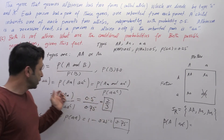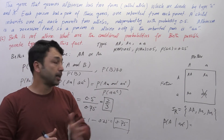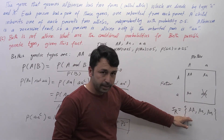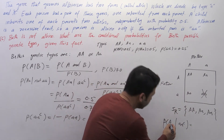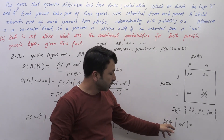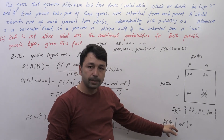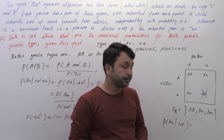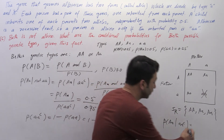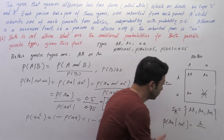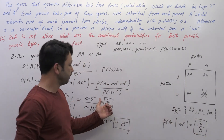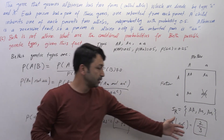We can also find this using the reduced sample space. In the reduced sample space, we have two sample points for the event capital 'A' small 'a', out of three total sample points, giving 2 divided by 3, which equals 2/3. So the same answer is obtained using both methods: 2/3.